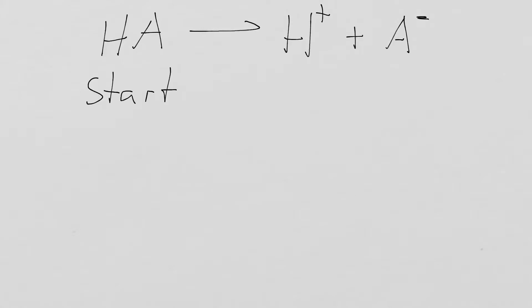When we start, we have a concentration of, let's say, 100 millimolar. Right at the beginning, what is our concentration of the protons? Zero. What is our concentration of A minus? It's also zero. Because this acid has not dissociated into anything.